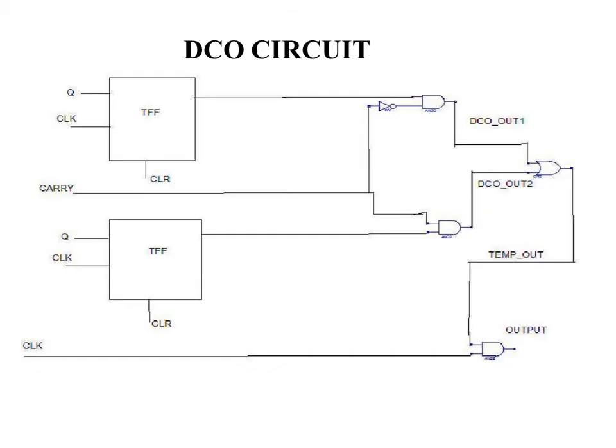This is the DCO circuit. Here I have implemented the DCO with a toggle flip-flop. A T flip-flop is a toggle flip-flop which inverts the input to the output. A temporary output is obtained, and this temporary output is ANDed with the clock to obtain the correct DCO output. The whole circuit acts as a DCO corrector.